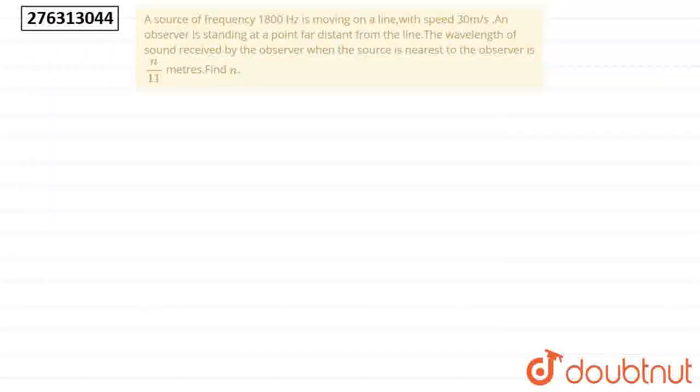So the question is, a source of frequency 1800 Hz is moving on a line with speed 30 m per second. An observer is standing at a point far distant from the line. The wavelength of sound received by the observer when the source is nearest to the observer is n by 11 meters. Find n.